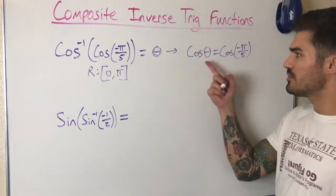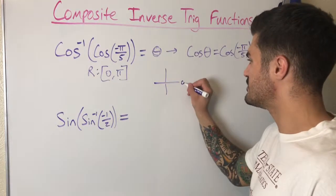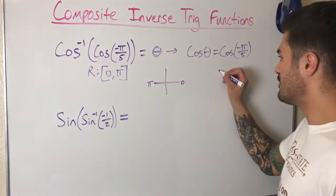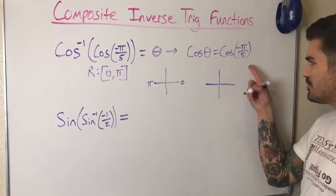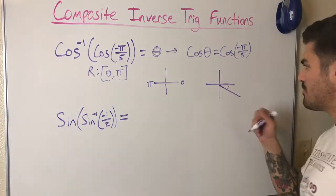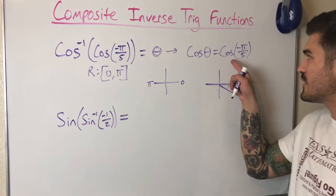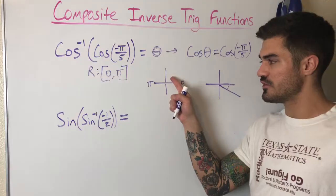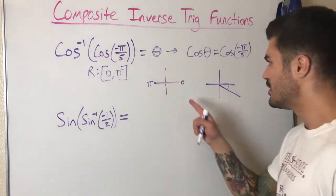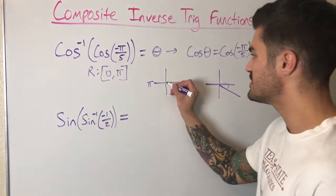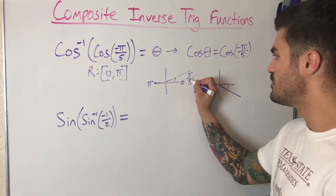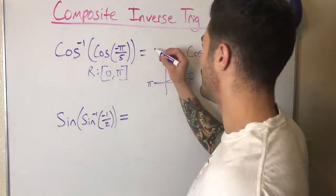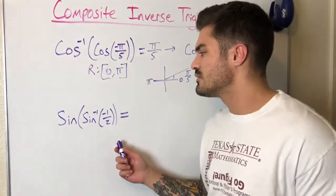I rewrite this as: cosine of what angle equals cosine of negative π/5? The range of cosine inverse is zero to π, so theta is in the first or second quadrant. Drawing negative π/5 — starting at zero and working backwards — my reference angle is π/5 and I'm in the fourth quadrant, so cosine is positive. That means I'm in the first quadrant. With reference angle π/5, my answer is simply π/5.